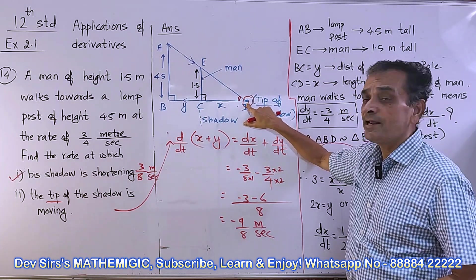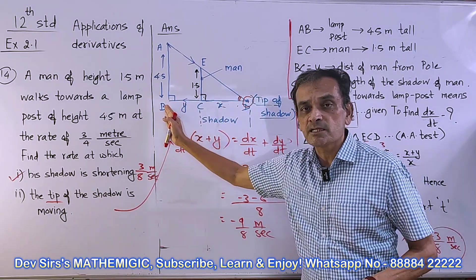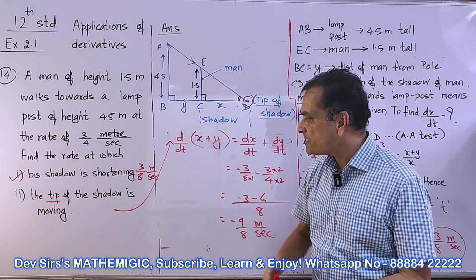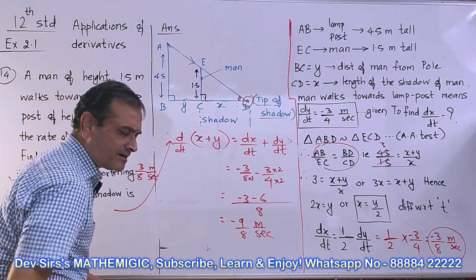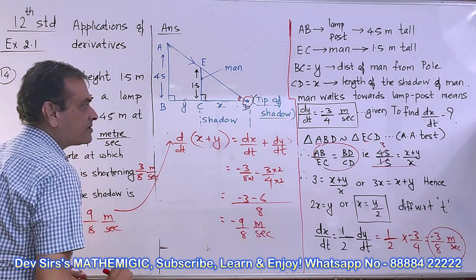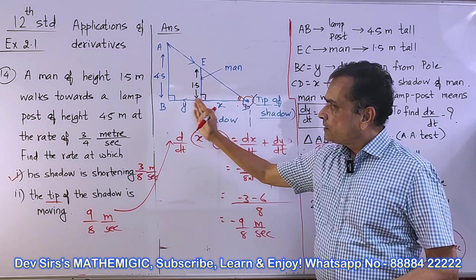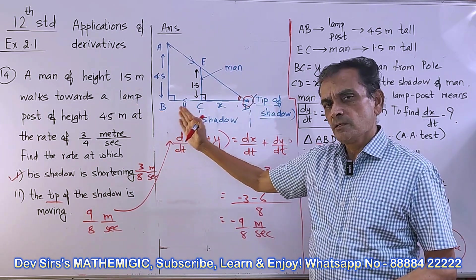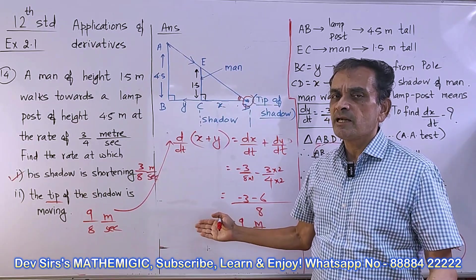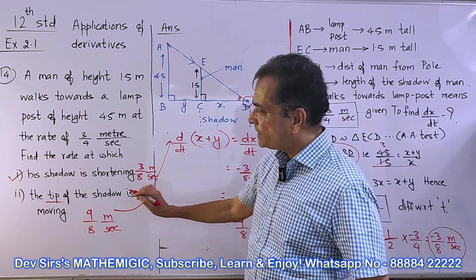That is X+Y, taking d/dt of it, because we're taking the total distance of the tip from the lamp post. So final answer, the second answer is 9/8 meters per second. Minus sign indicates moving towards the lamp post. So every dY/dT, dX/dT, d/dt of (X+Y) will have minus sign as sign convention.